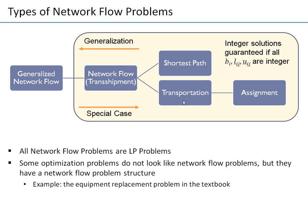This is what we call the bipartite network. So whenever you have a transshipment with a bipartite network — all supplies on the left, all demand on the right, and connections only left to right — it becomes a transportation problem. And it can actually be solved in Excel in a much easier way than the transshipment problem, because the variables and costs can be put in a two-dimensional table.